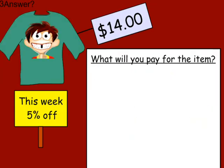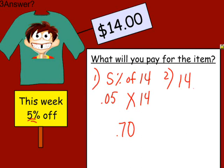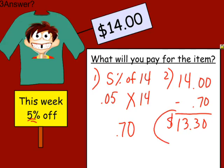Now this one: a t-shirt for $14 is on sale for 5% off. Be careful on this one. You're saving 5% of the $14 — 'of' means multiply. Don't put 0.5, because that would be a 50% savings. 5% is 0.05 times 14. You are saving $0.70. So the original cost was $14 minus the discount of $0.70, meaning you would pay $13.30 for that t-shirt after the discount.